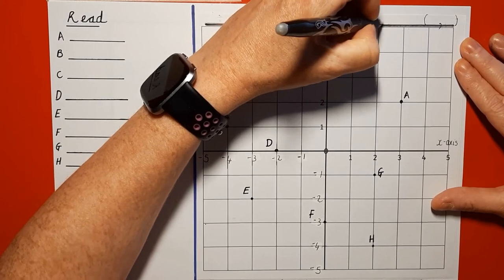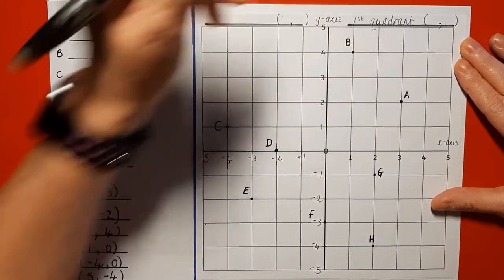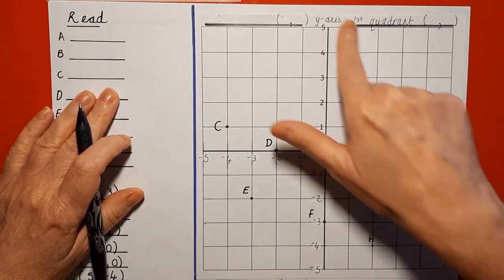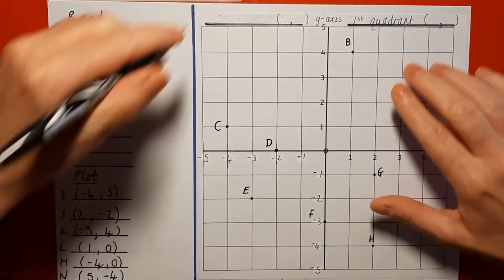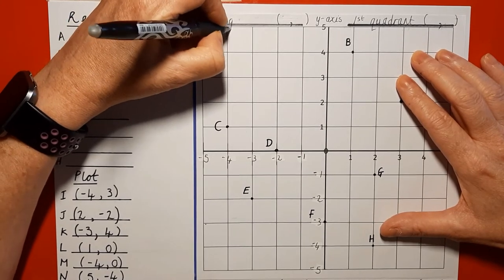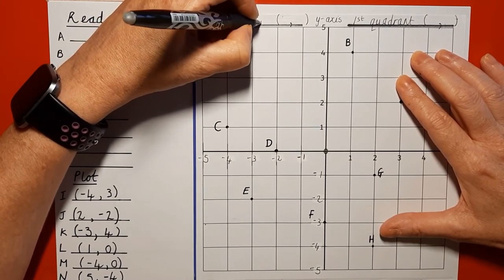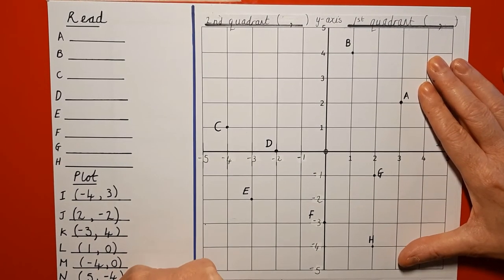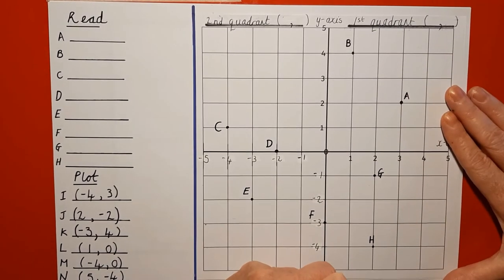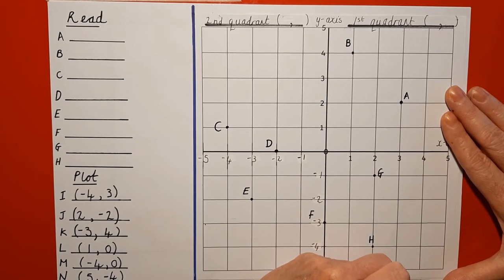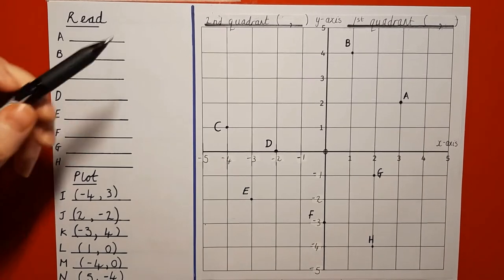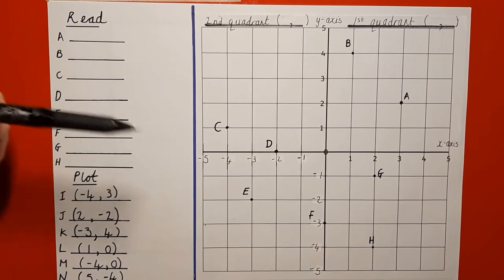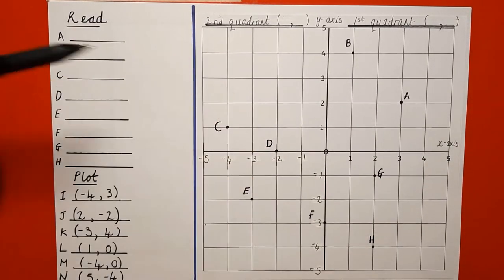Moving further anti-clockwise, the third quadrant would be here, and then finally we have the fourth quadrant. I've already plotted some positions, and I'm now going to show you how to read these coordinates in the four quadrants. We use the same rule exactly as before — the X axis number, how many across, comes first before how many up or down.